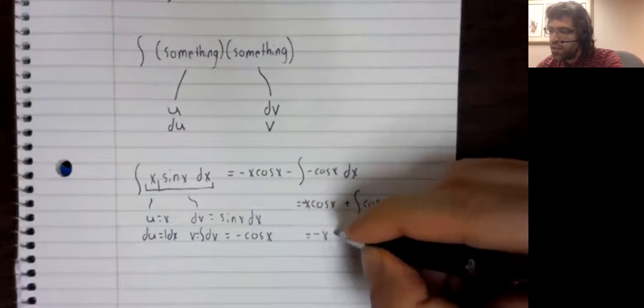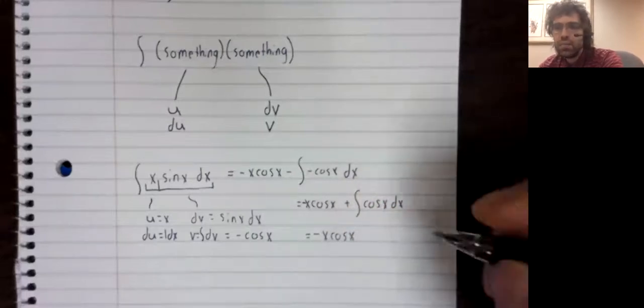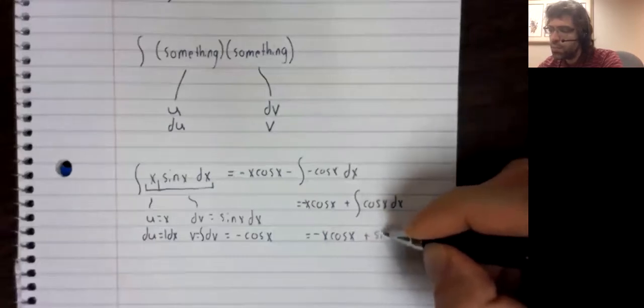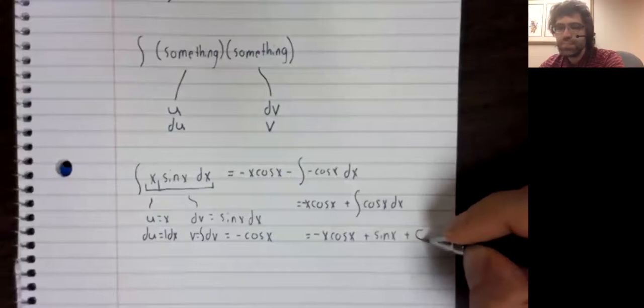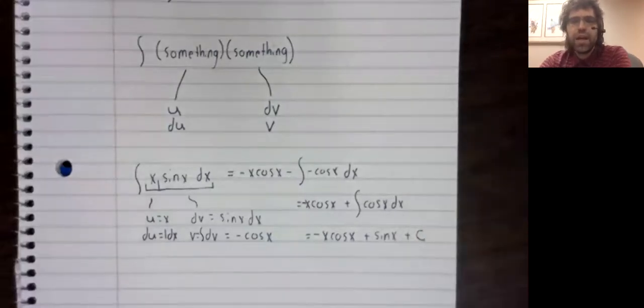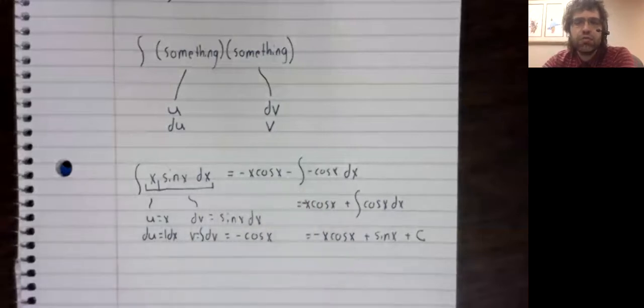And the antiderivative of the cosine, well, that we know. It's the sine of X. And there's our integral. We'll need to do some more examples and put in some effort to master this. But this is the idea behind integration by parts.